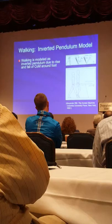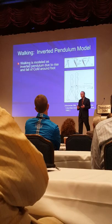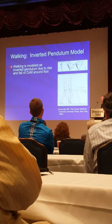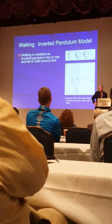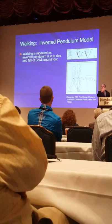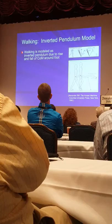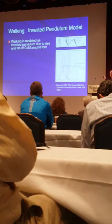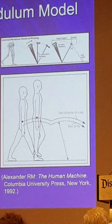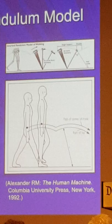Modeling means we're trying to make a complex system more simplified so we can understand it better. With walking, we say that walking is like an inverted pendulum — our bodies swing over a planted foot. The center of mass is behind the foot when it starts, rises over the planted foot, and then falls. We see lower center of mass, higher center of mass, then lower again.